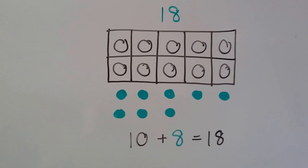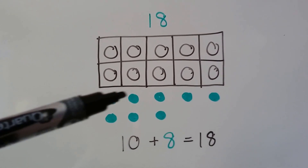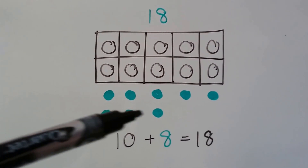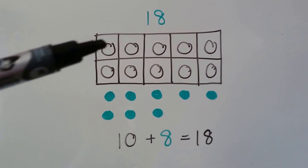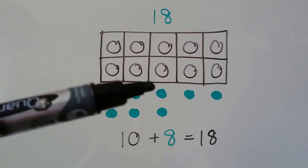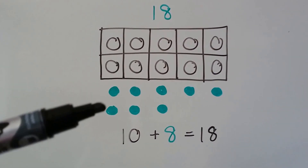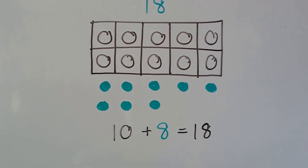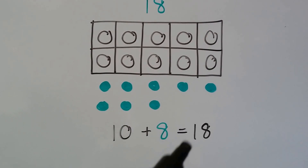If we needed a sum of 18, we could use our 10 frame and add 8 circles. That would give us 10, 11, 12, 13, 14, 15, 16, 17, 18. 10 plus 8 equals 18.